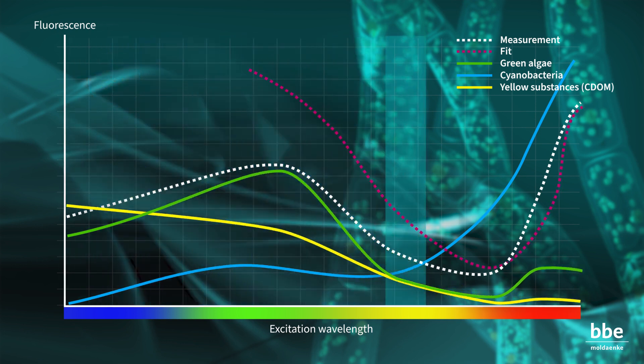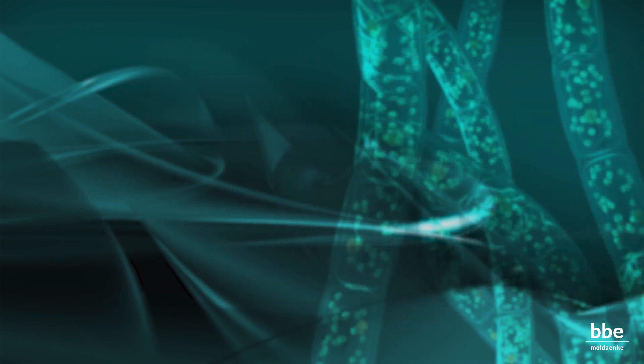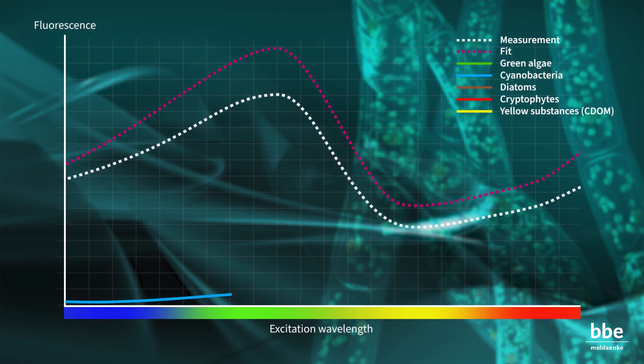Knowing the fluorescence properties of yellow substances, the BBE devices compensate for their effects. A sample taken from a water body will probably contain a mixture of different algae classes.